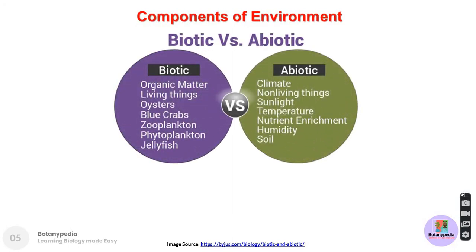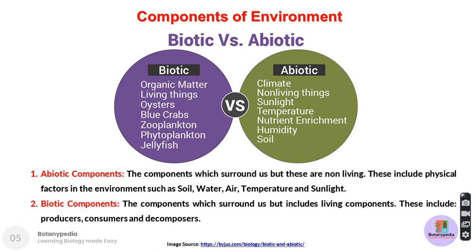There are basically two components of the environment: biotic and abiotic. The abiotic component consists of anything that is non-living. 'A' means absence, and 'bio' means life, so abiotic means non-living. These include physical factors such as soil, water, air, temperature, and sunlight. For example, if you are sitting in a room, the table, the air, and the drinking water in the room make up the abiotic components.